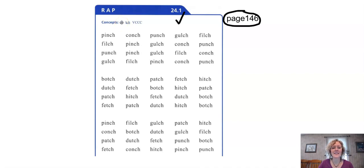Let's take a look at what we're going to be echoing or wrapping today. We're doing the CH and the TCH in a pattern of vowel, consonant, consonant, consonant. Echo after me: pinch, conch, punch, gulch, filch.